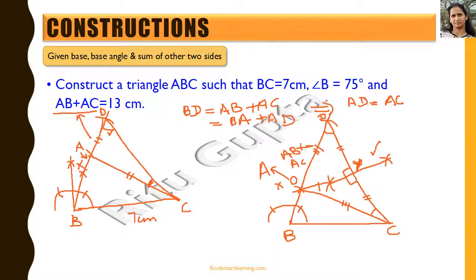In both methods we draw BD equal to the sum of the two sides. In the first method, we construct equal angles directly at D and C to find point A. In the second method, we draw the perpendicular bisector of CD, and where it intersects BD is point A — because of congruency, OD equals OC. Both approaches give the same triangle ABC.